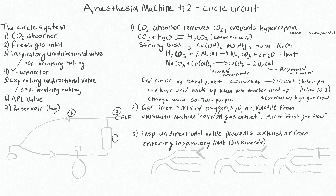Number three is the inspiratory unidirectional valve. This ensures unidirectional airflow toward the patient, preventing exhaled air from entering the inspiratory limb. Air coming back from the patient must travel in the expiratory direction and cannot go back through the inspiratory limb because of this valve. Air flows through the unidirectional valve into the patient, and when air is exhaled, it cannot go backwards through the inspiratory limb — instead it follows the path of least resistance out through the expiratory limb.